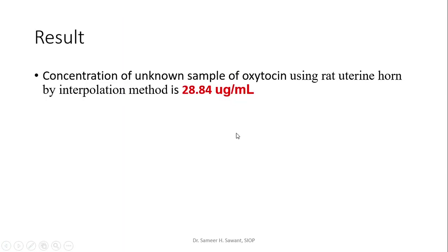Students can now write the result: the concentration of the unknown sample of oxytocin using rat uterine horn by interpolation method is 28.84 microgram per ml. Thank you.